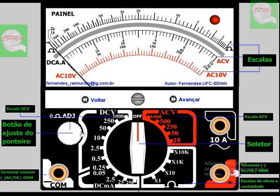Se observarmos aqui, nós temos um símbolo 0, um ohm, a letra ohm, ADJ, esse botãozinho aqui do lado esquerdo onde está escrito botão de ajuste do ponteiro. Todas as vezes que eu for fazer um aferimento, uma aferição na escala de ohms, eu necessito ajustar este ponteiro. Então, este botão serve para fazer um ajuste no ponteiro.